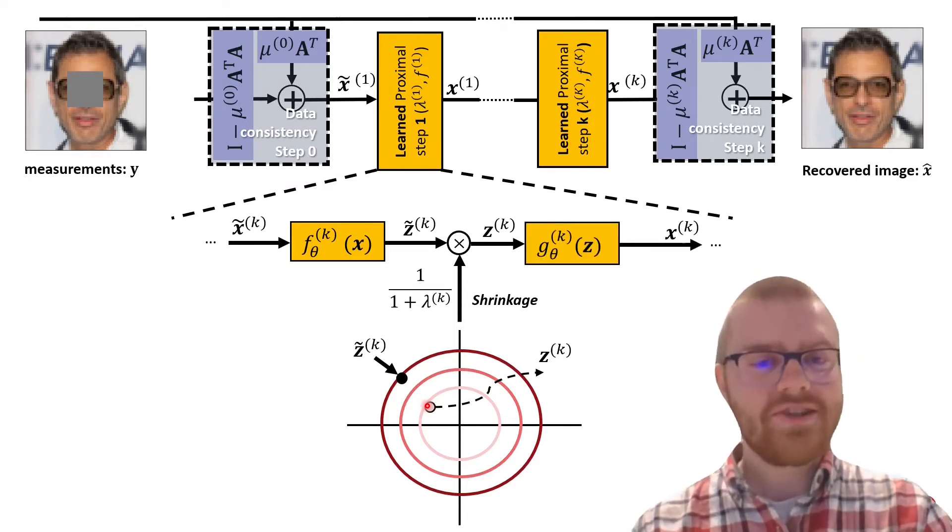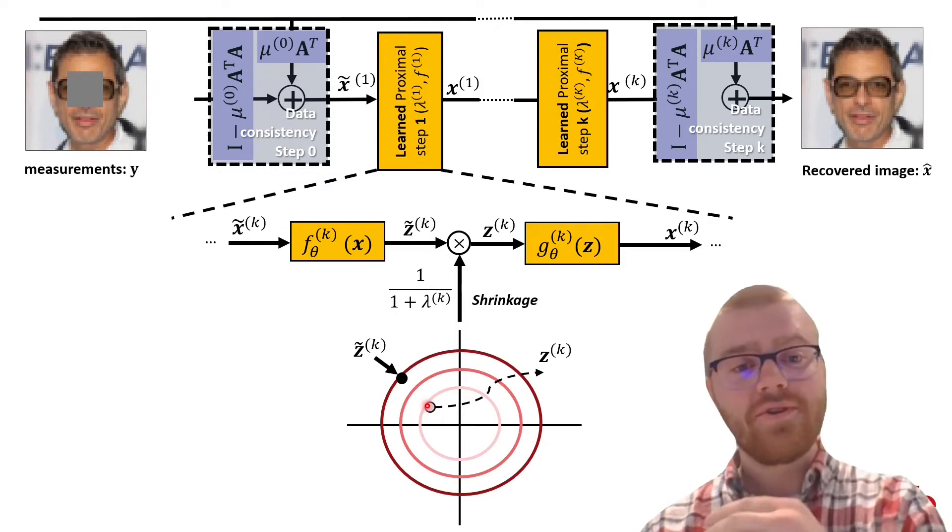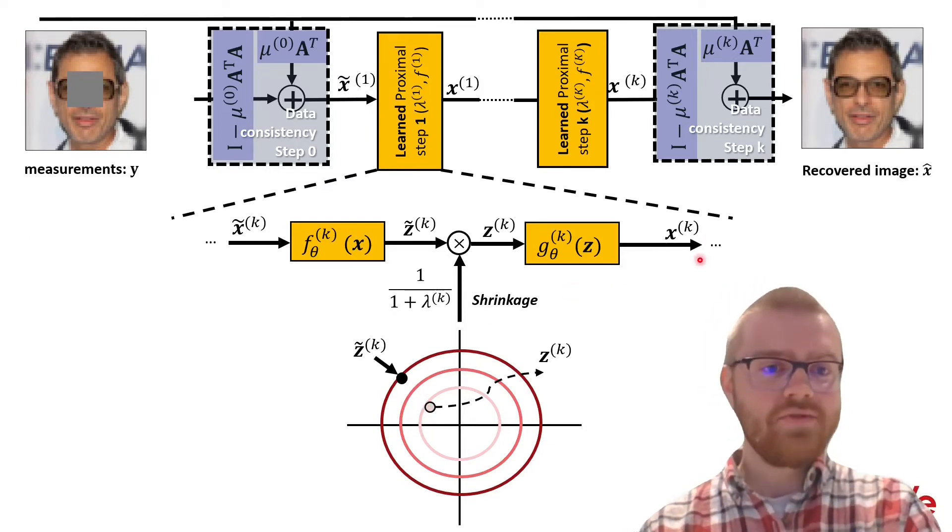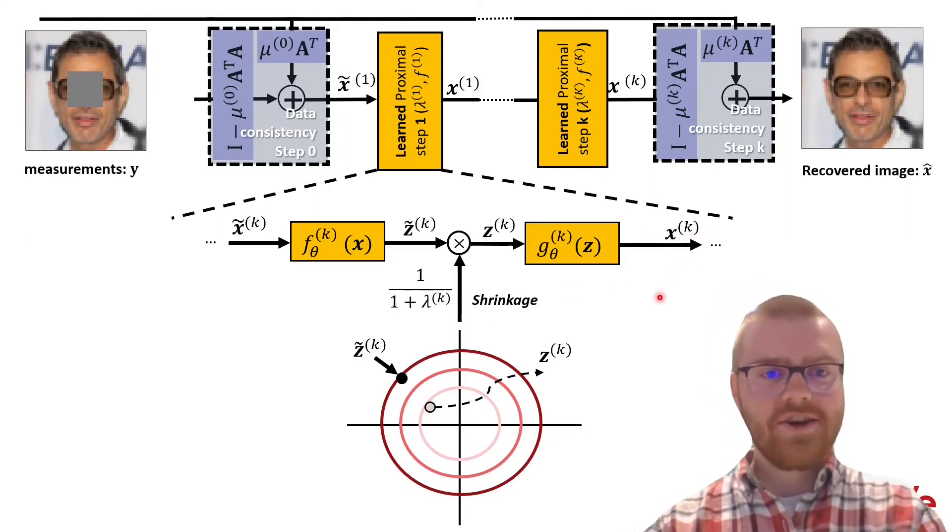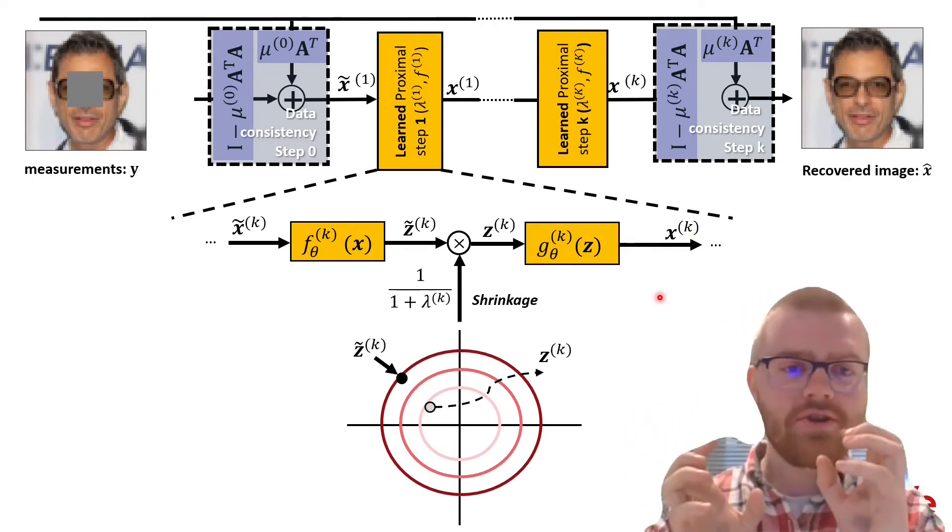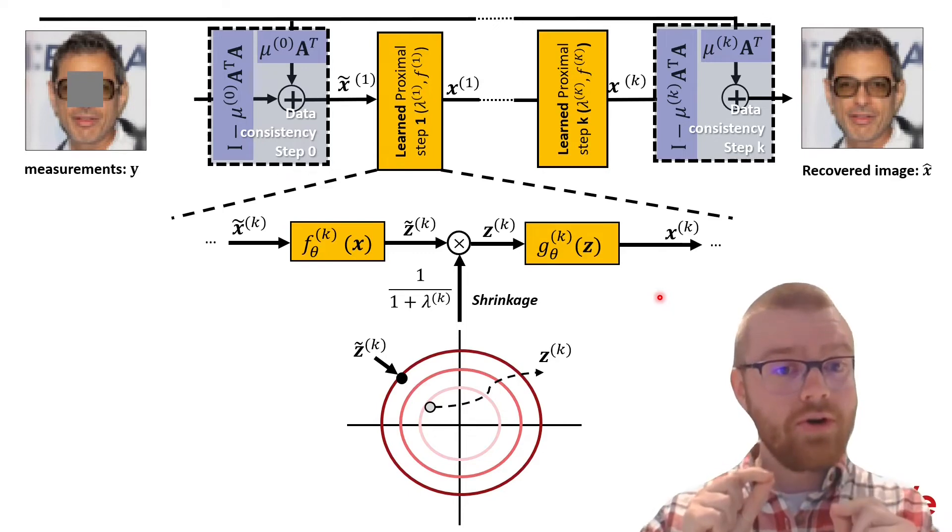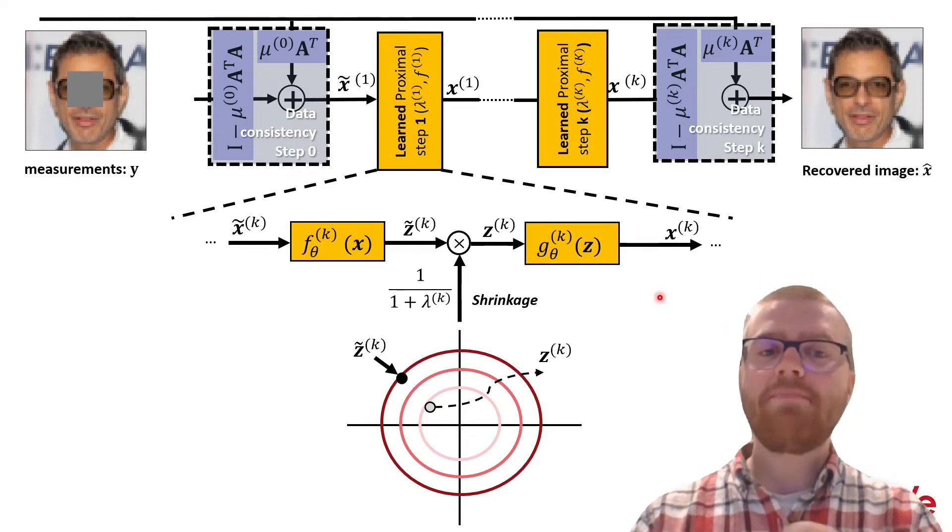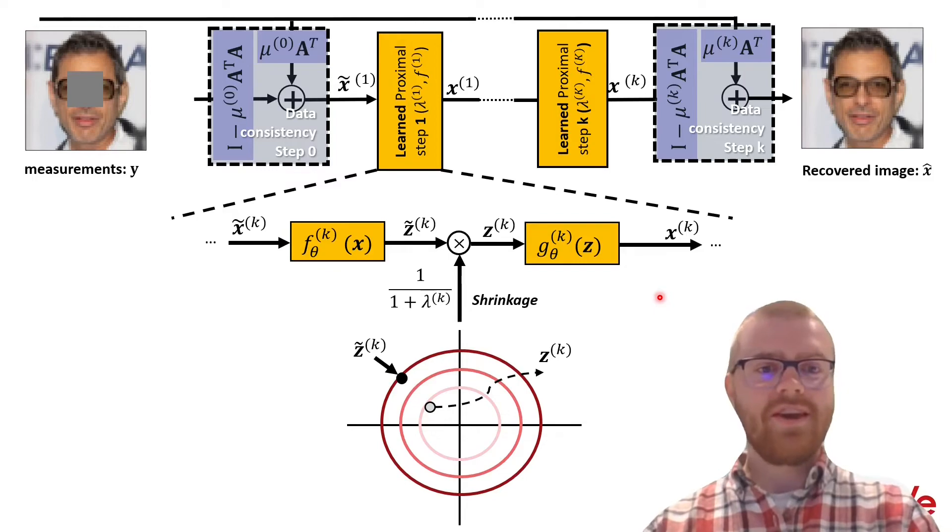And then now, because our flow is bijective, we can do the reverse direction and map back to a better image here x. So, really what we're doing is we're taking this image, going to Gaussian space, going to a more likely position in Gaussian space, and mapping back to a better image.